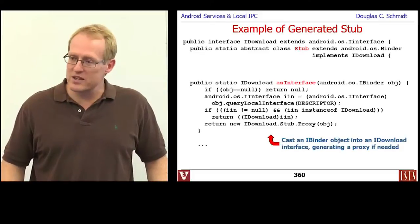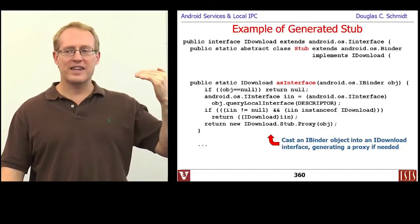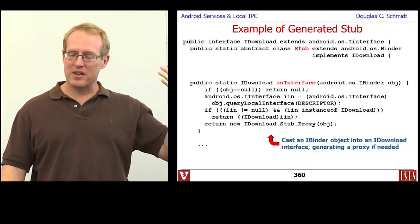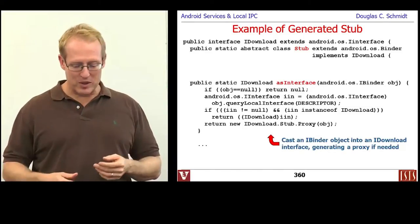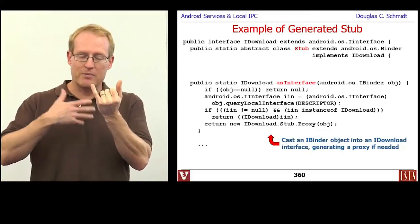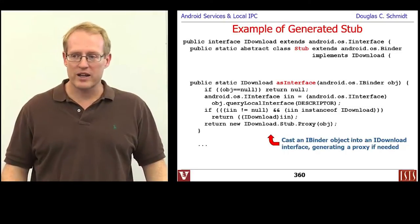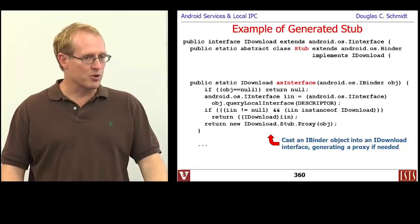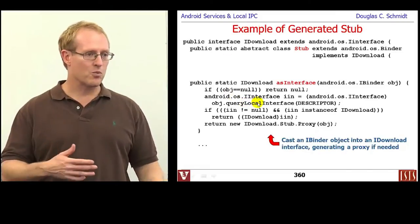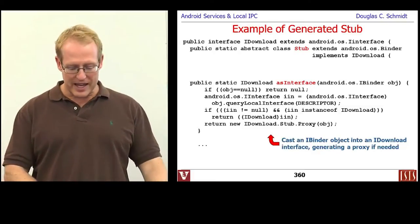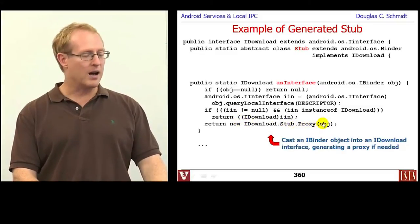There's also another important method called asInterface. It's typically used by the onServiceConnected hook method that gets called back by the Android binder framework when the onBind method returns. What it does is allow you to take an iBinder object — which is what comes back from the service side — and narrow it, or downcast it, to the appropriate underlying interface we're defining, which in our case would be the IDownload service. You can see it checks whether we need a proxy or whether we're on the server side. If we need a proxy, it creates a new idownload.stub.proxy.